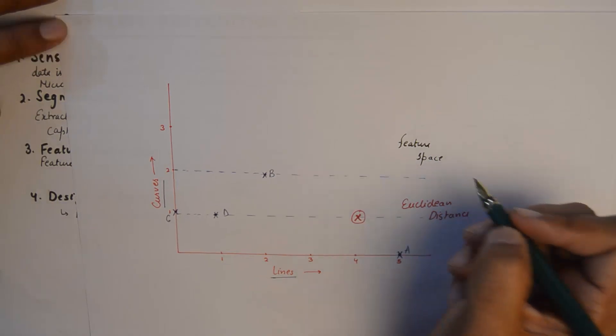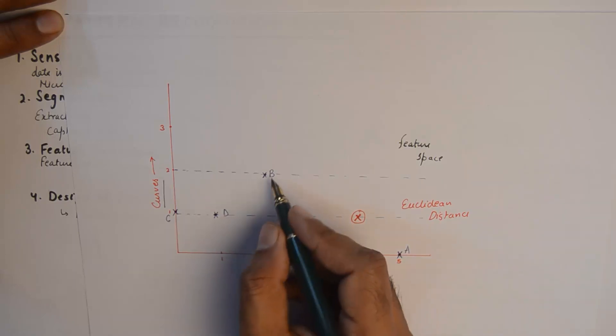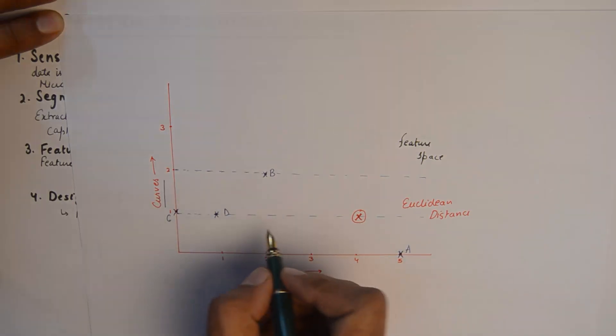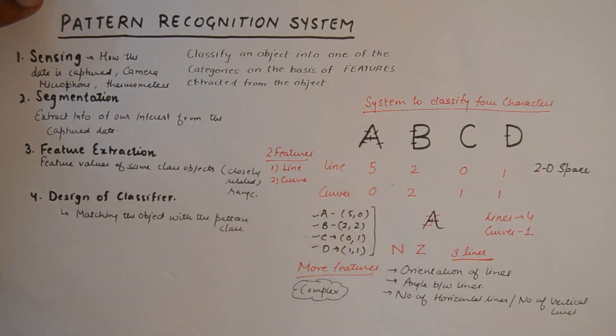These are data points. A with five lines and zero curves we see here, B with two lines and two curves, C and D. So you can draw these data points here.